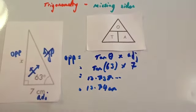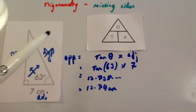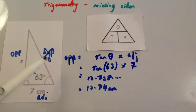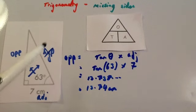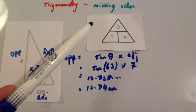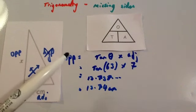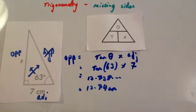Just to recap the steps: label the sides, cross off the side that you don't need or haven't been given, work out which triangle you need to use, then cover up what you want, and then just use the formula.